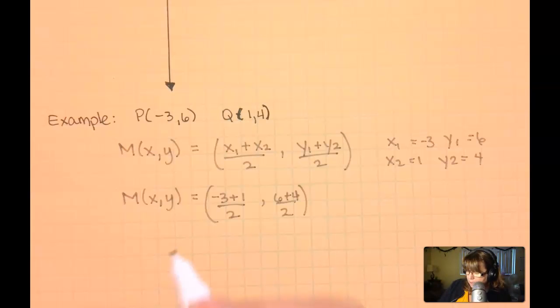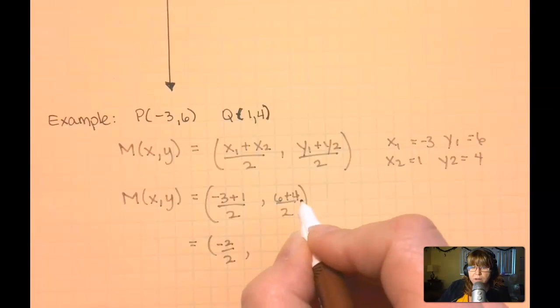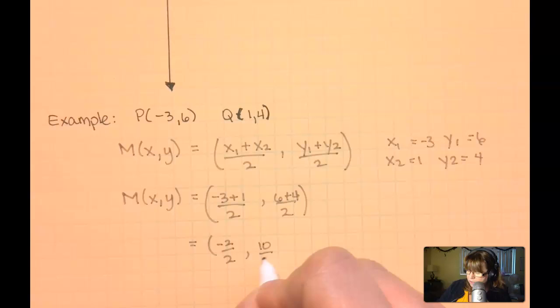Negative 3 plus 1 is negative 2, all divided by 2. 6 plus 4 is 10, all divided by 2, and therefore my midpoint is going to be negative 1, 5.